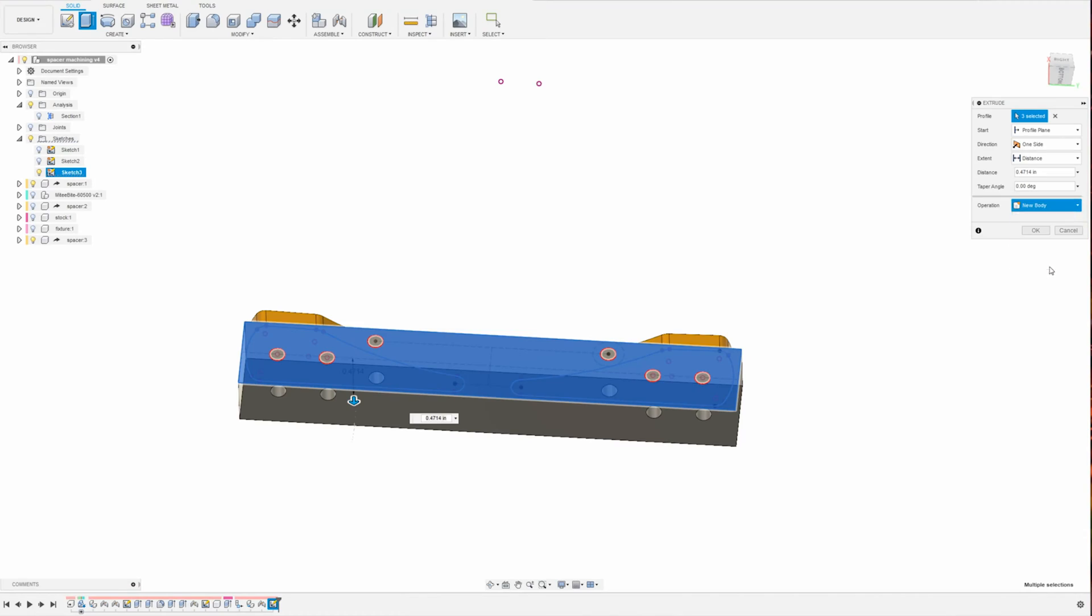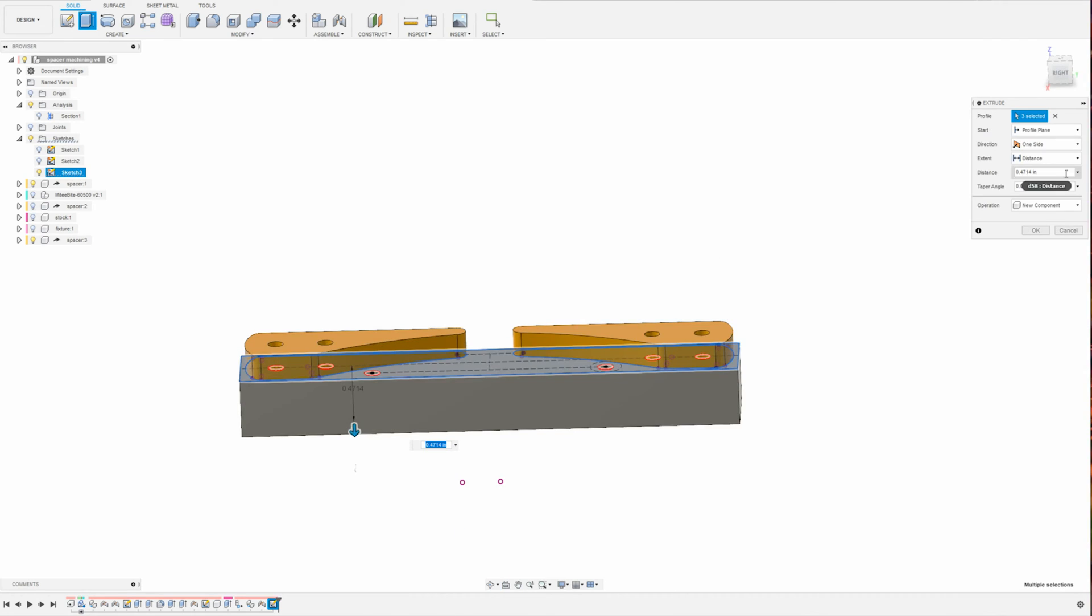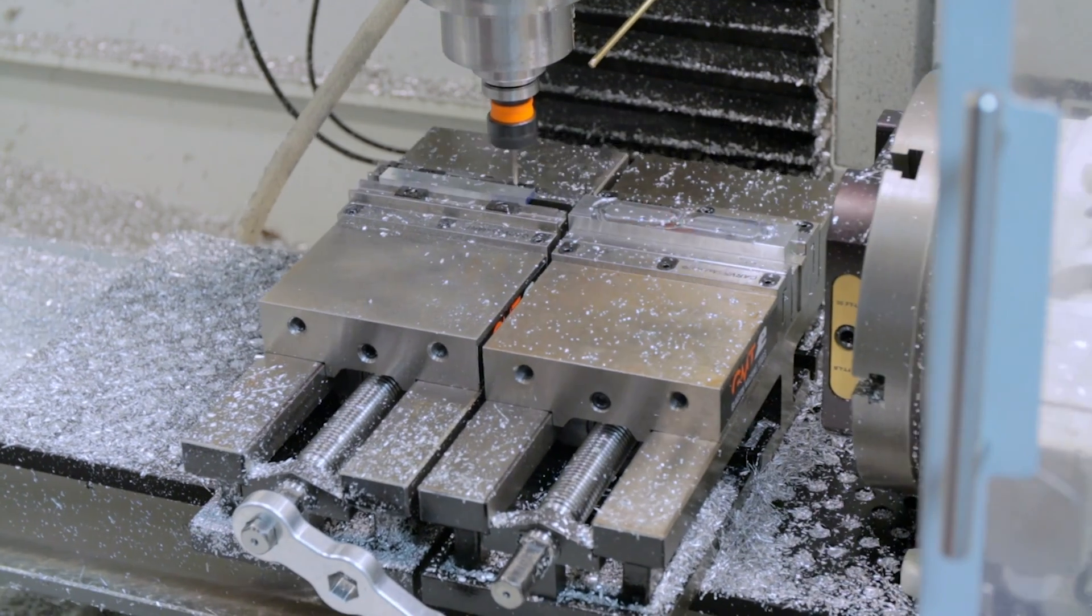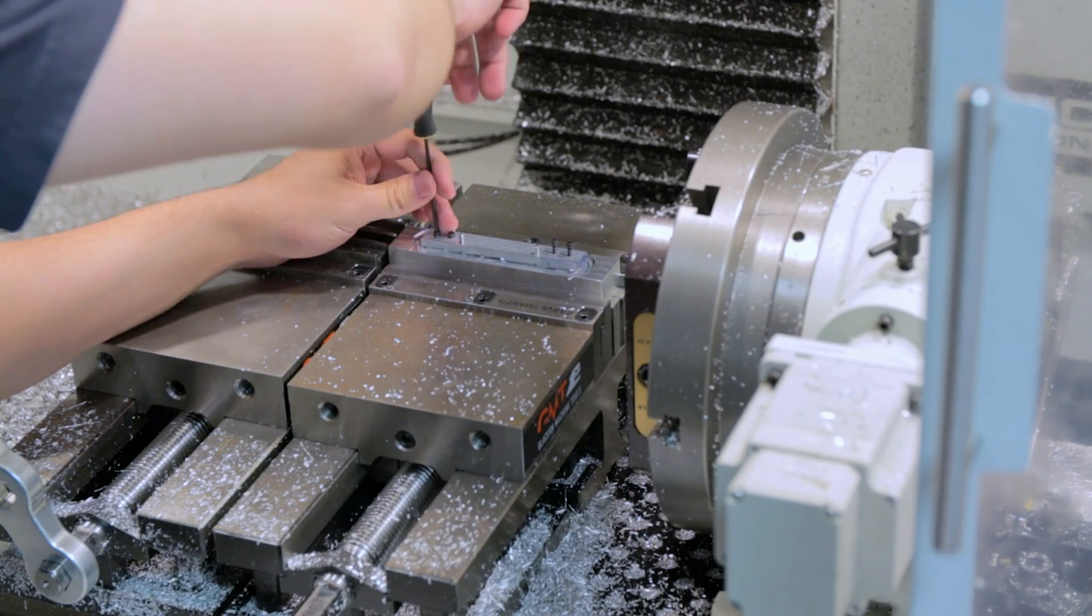And this time I made handle spacers too, which I had skipped last time. And it's the same thing: face the stock, drill some holes, pin it in place, screw it down, and machine away the excess.